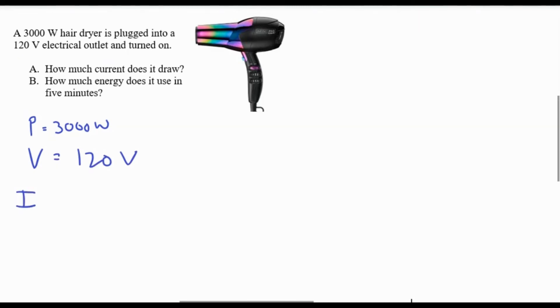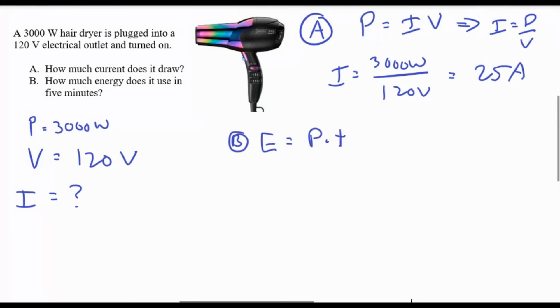Use P equals IV to find the current. Rearrange to get I equals P over V, plug in to get 25 amps. For part B, energy is just power times time, so plug in your numbers, convert minutes to seconds, and you get 900,000 joules - a lot of energy, but the right answer.